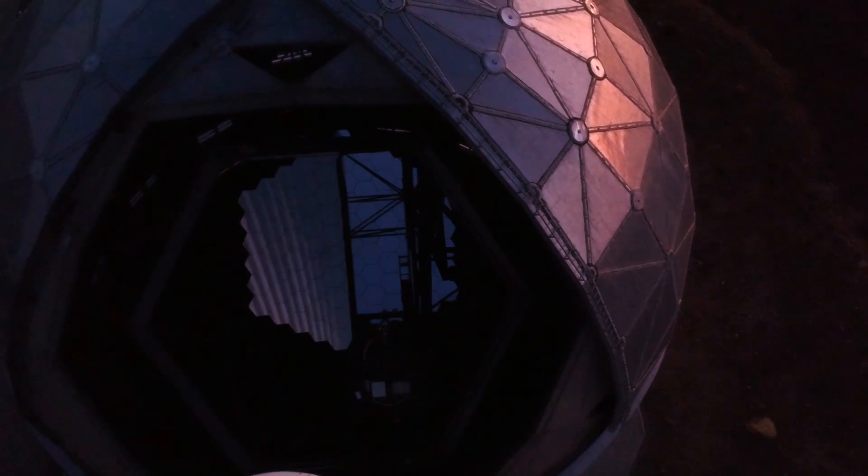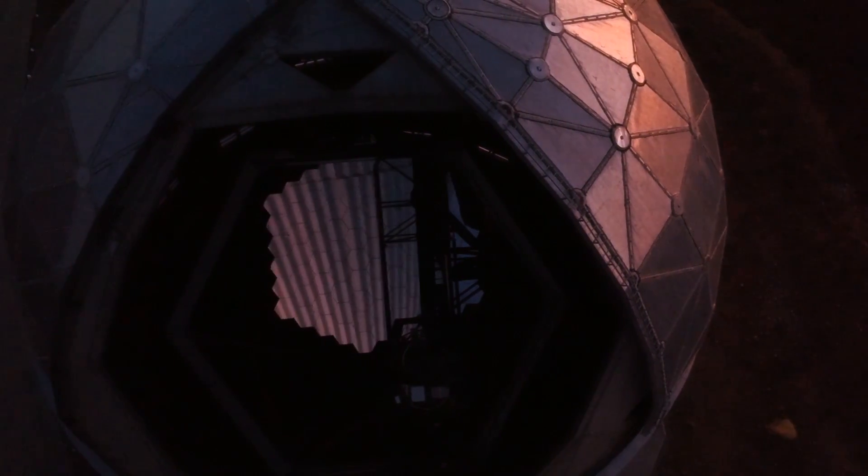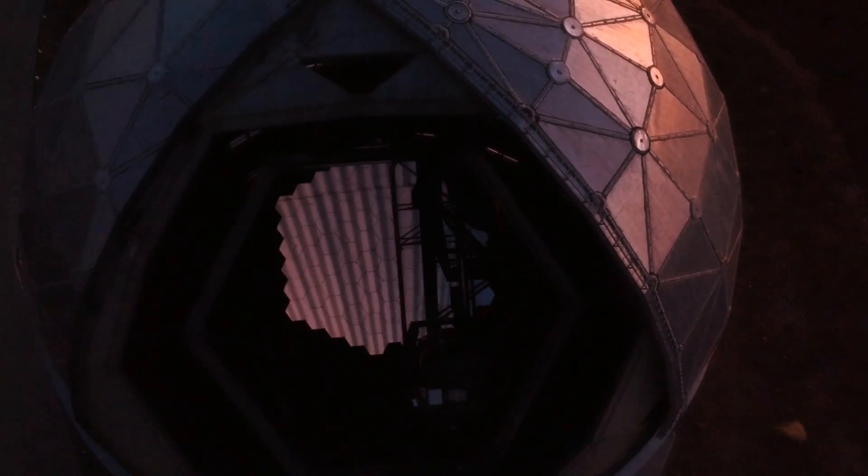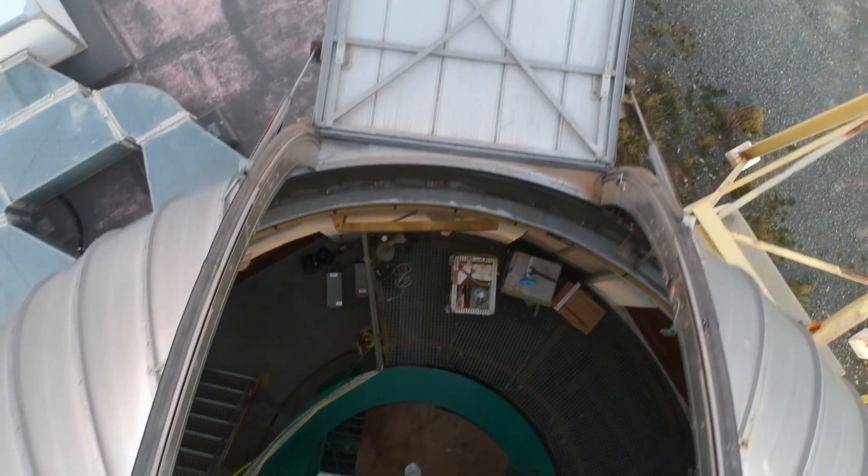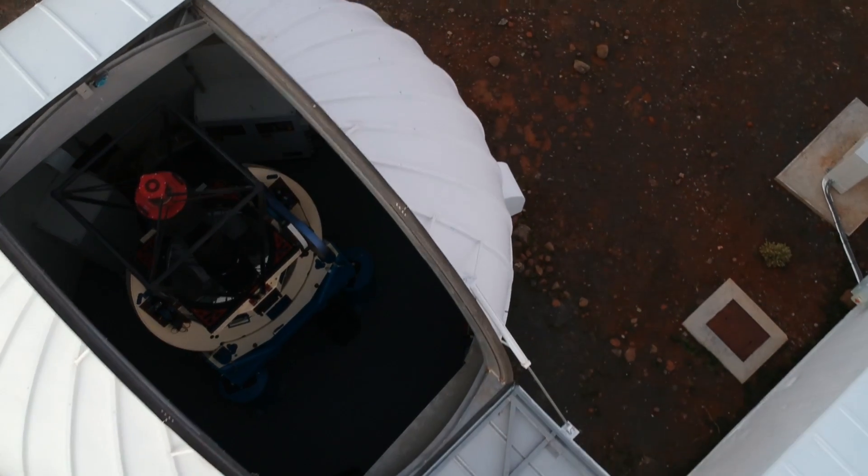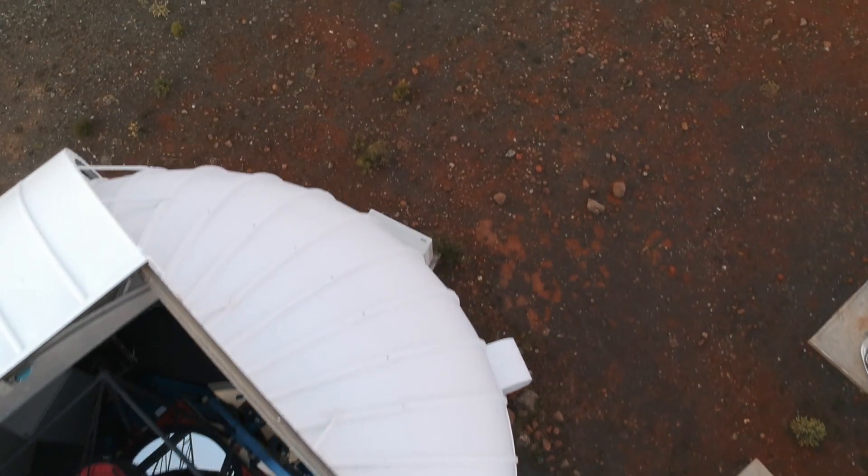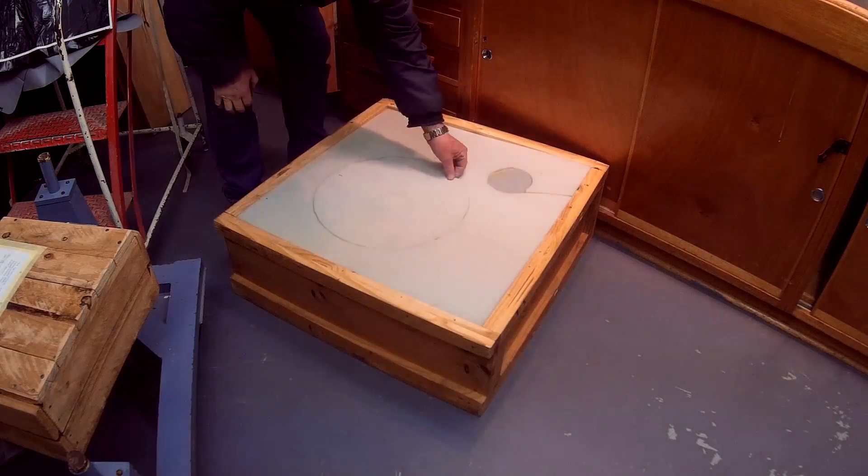Professional telescopes in constant use need their mirrors to be re-aluminized roughly every two years. The word aluminizing suggests that aluminum is involved, which is indeed the case. A very thin layer of very pure aluminum gets deposited onto the mirror's surface in a special vacuum deposition process. This video shows this process in detail from beginning to end.